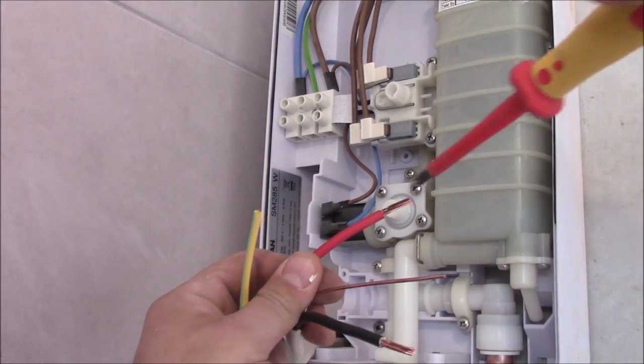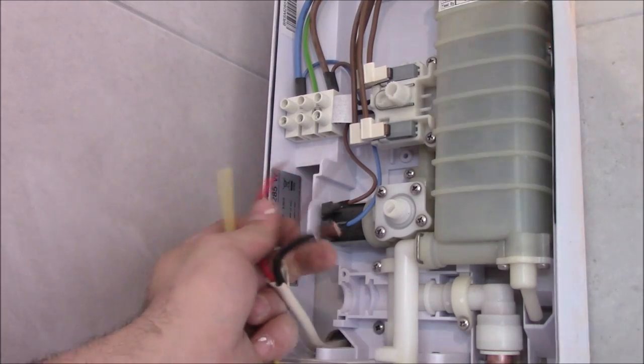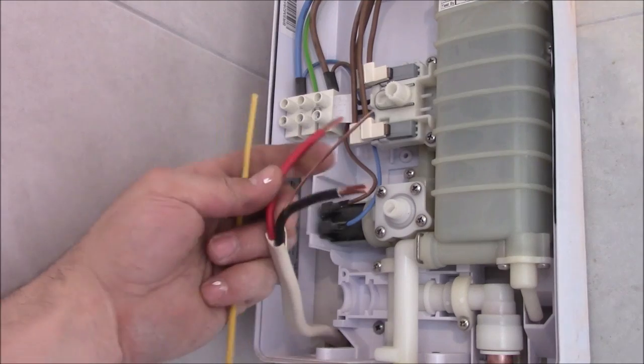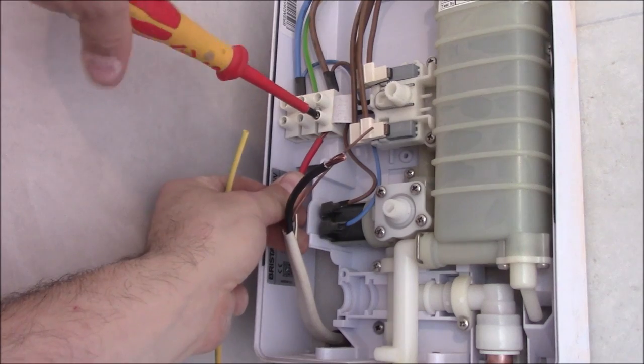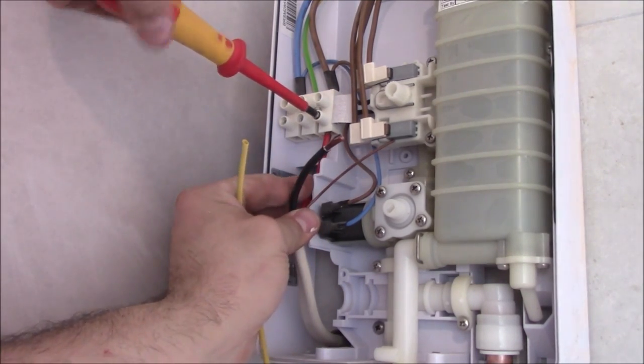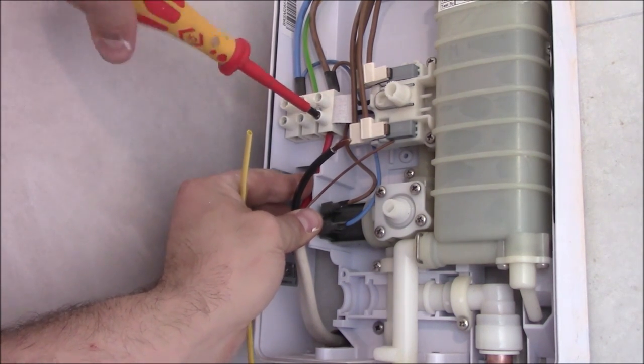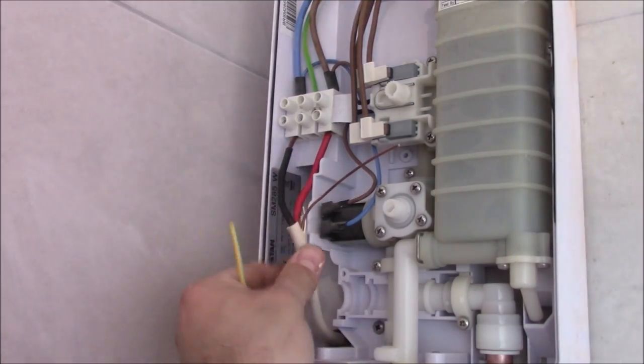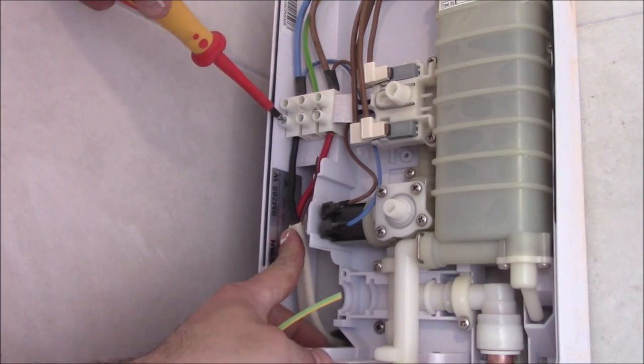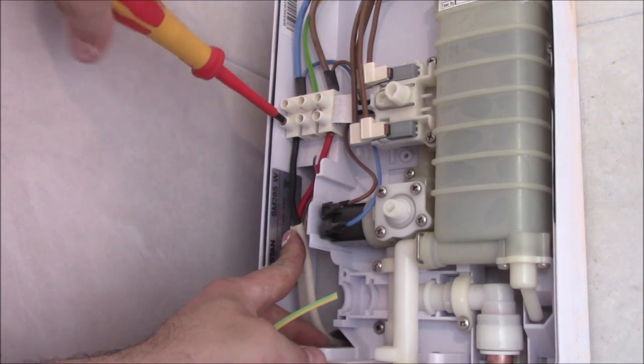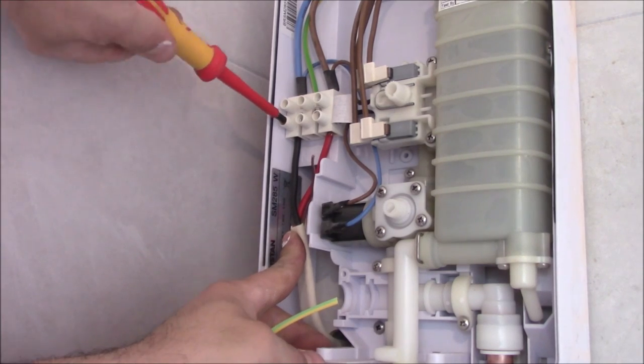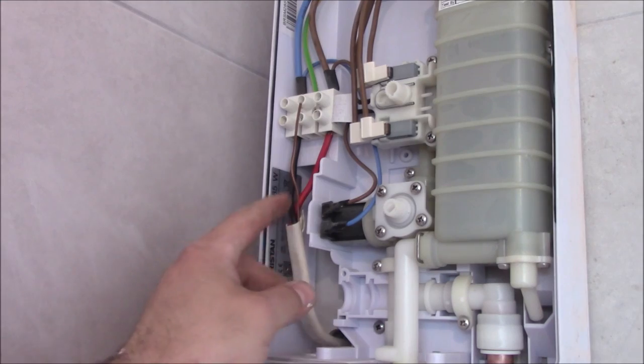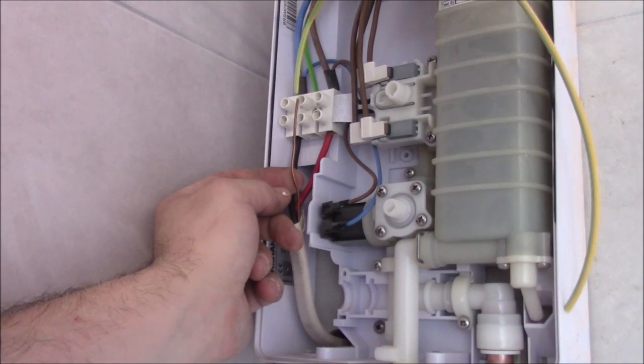Now you see you've got black neutral, red live, and the earth inside. This is the old colored, the new one is the blue neutral and brown the live. So we connected red to the brown, so this the live conductors, and then the black one into the blue one so this is neutral. Make sure you tight very well and that's our earth wire it's going in the middle but we need to put a sleeve on it.